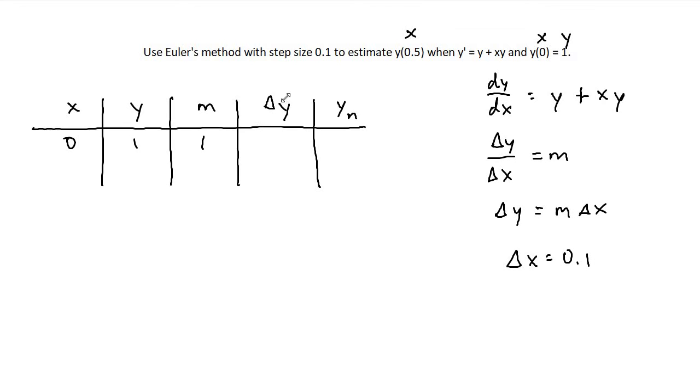In order to find delta y, we just have to find our slope and our delta x. Notice how our slope is 1 and delta x is 0.1. So delta y is just going to be equal to 1 times 0.1, or 1 times 1 over 10, which is just going to be equal to 1 over 10 or 0.1.